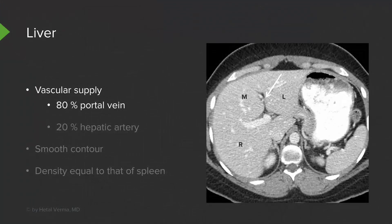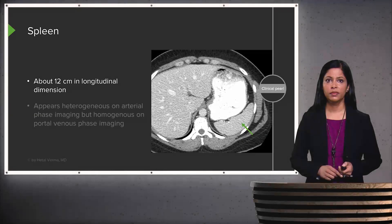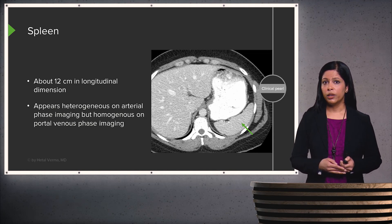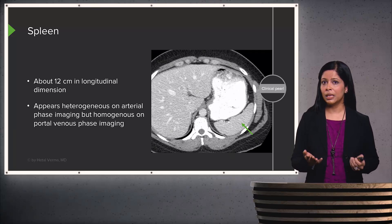About 80% of the vascular supply to the liver is portal vein, with about 20% from the hepatic artery. Normally the liver should have a very smooth contour — if it doesn't, suspect an abnormality. The density of the liver should equal that of the spleen. The spleen is about 12 centimeters in longitudinal dimension, best measured on ultrasound. It tends to appear heterogeneous on arterial phase imaging but should appear homogeneous on portal venous phase imaging, at about the same density as the liver.